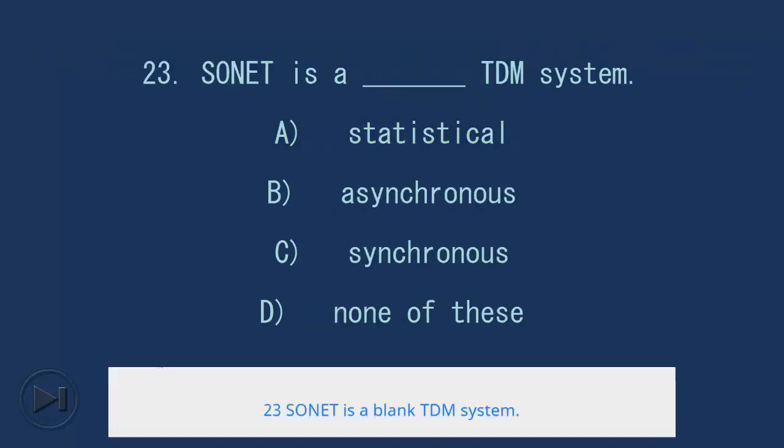23. SONET is a blank TDM system. A. Statistical, B. Asynchronous, C. Synchronous, D. None of these. Answer: C. Synchronous.